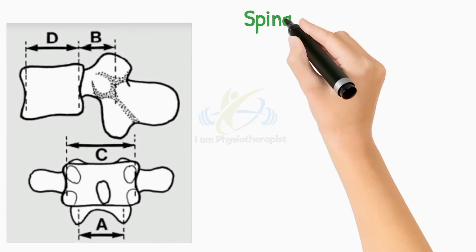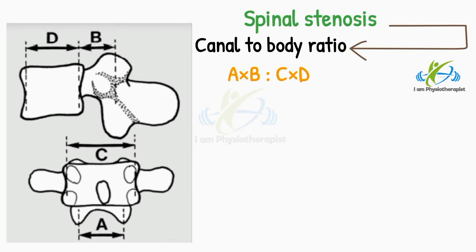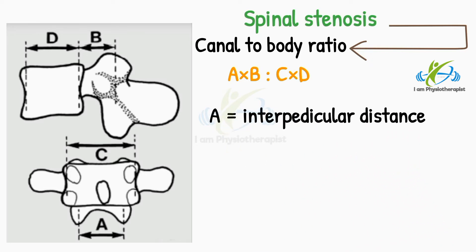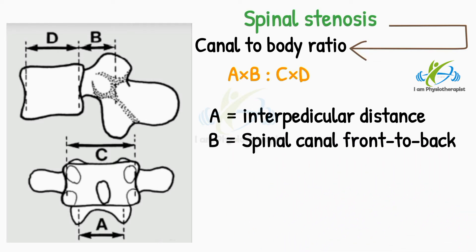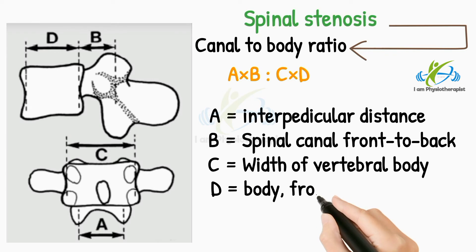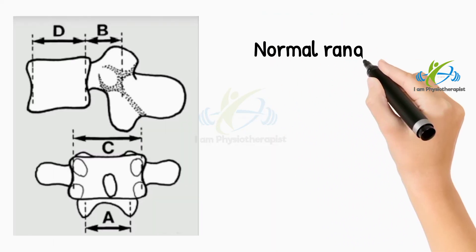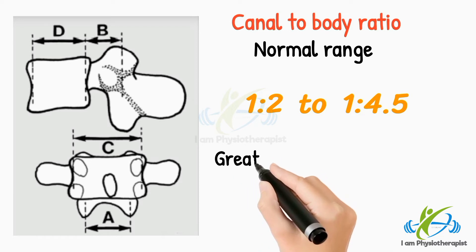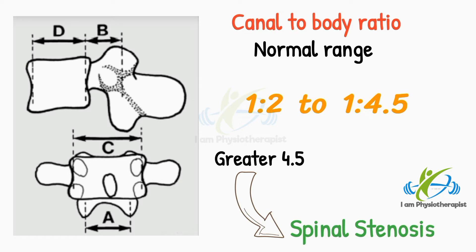If spinal stenosis is suspected, calculate the canal-to-body ratio: (A × B) / (C × D). Point A shows interpedicular distance; point B shows spinal canal front-to-back; point C shows width of vertebral body; point D shows body front-to-back. The normal range is from approximately 1:2 to 1:4.5. Values greater than 4.5 suggest spinal stenosis.